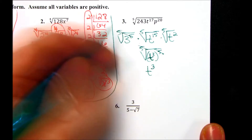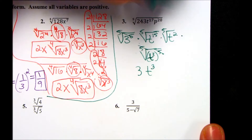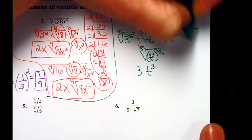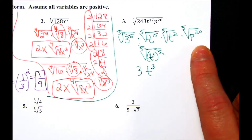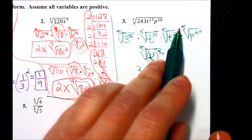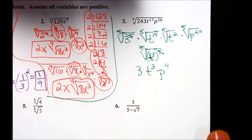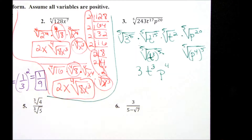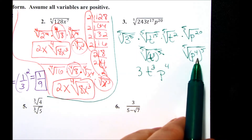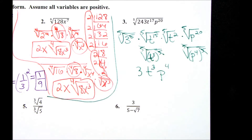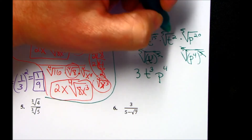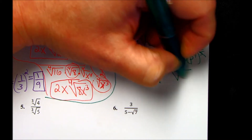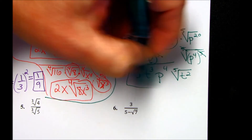This 5th power and 5th root cancel, so we have a 3 on the outside. For p to the 20th: because 20 is a multiple of 5, it's a perfect 5th power. We divide 20 by 5 to get p to the 4th — or rewrite as p to the 4th to the 5th power, so that 5 times 4 equals 20. The 5th root and 5th power cancel, giving p to the 4th. The only thing not reduced is the 5th root of t squared, which is not a perfect 5th power, so it stays underneath. That simplifies the expression.